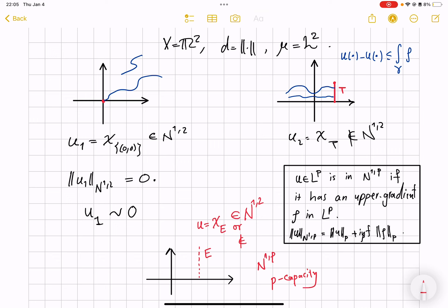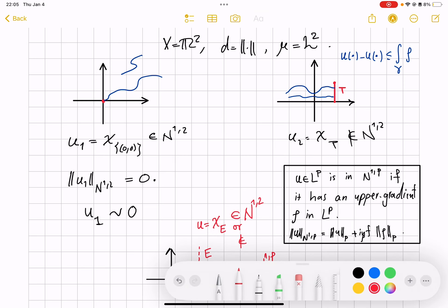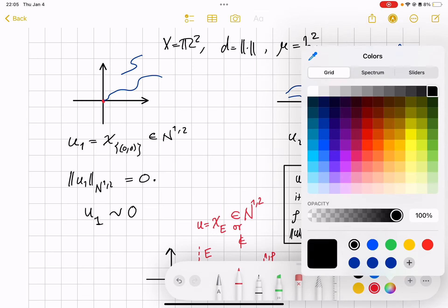we have to deal with sets of p capacity 0 or not. That's one notion that is needed for further study of Newtonian-Sobolev functions, the notion of capacity of sets. And the other notion, another way of looking at this, is through the definition of upper gradient itself.